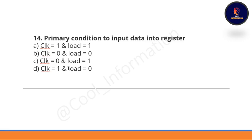Question 14: The primary condition to input data into a register — this is a very important question. Option A: clock = 1, option B: load = 1, option C: both clock and load = 1, option D: both clock and load = 0, option E: clock = 0 or load = 1. The correct option is C, which is both clock and load equal to 1.